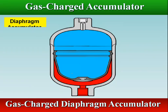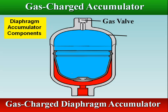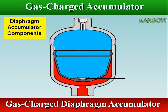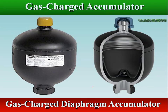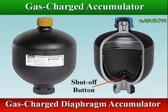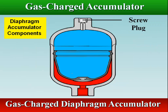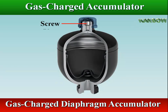Diaphragm type accumulator consists of a diaphragm secured in a shell and serving as an elastic barrier. A shut-off button, secured at the base of the diaphragm, covers the inlet of the fluid connection when the diaphragm is fully stretched. This prevents the diaphragm from being pressed into the opening during the pre-charge period. On the gas side, the screw plug allows control of the charge pressure and the charging of the accumulator by means of a charging and testing device.